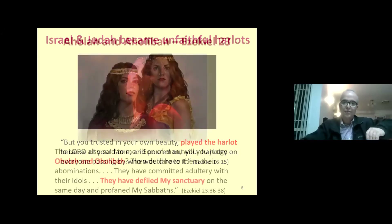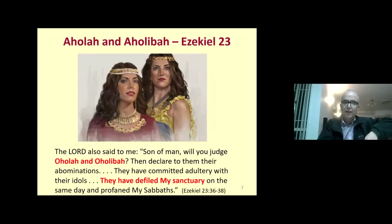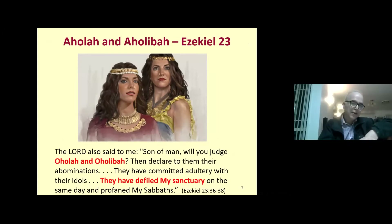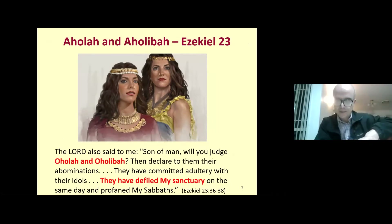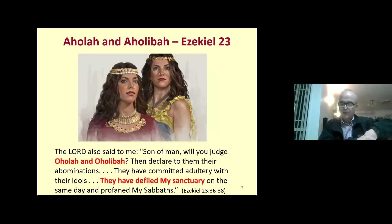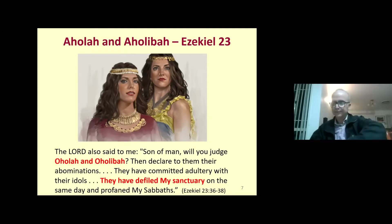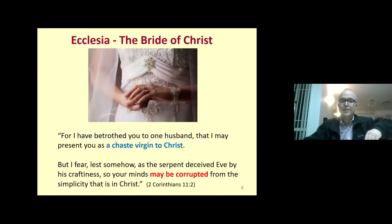Ezekiel 23 is another play on this story — the story of two harlot sisters. These two women are representative of Samaria, the capital of Israel, and Jerusalem, the capital of Judah. So the symbol of a harlot represents an unfaithful ecclesia who has corrupted the worship of God.